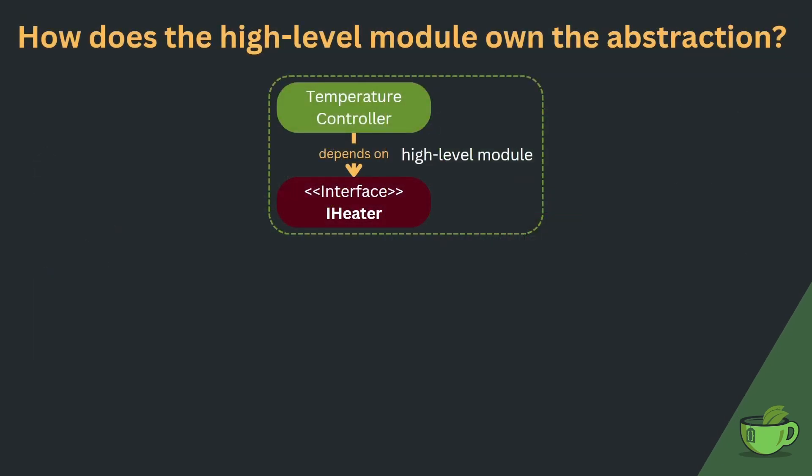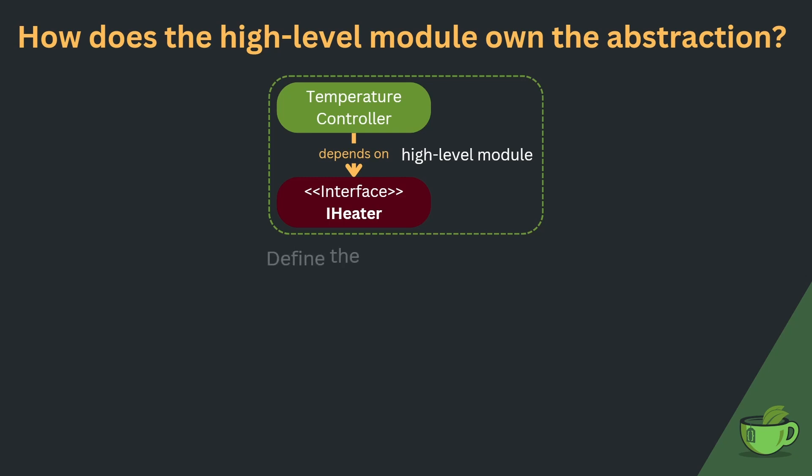Now that we have seen it is a requirement for dependency inversion that the abstraction becomes a part of the high-level module, the question arises: how can we make sure that the high-level module owns the abstraction? We could start by defining the abstraction in the high-level module's namespace, or whatever your preferred programming language offers in terms of grouping mechanisms. This clearly states our intention that there should be strong coherence between the abstraction and the high-level module.